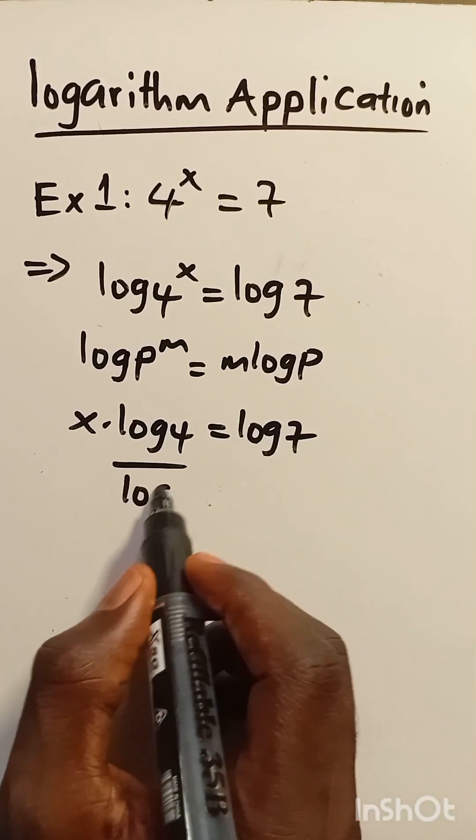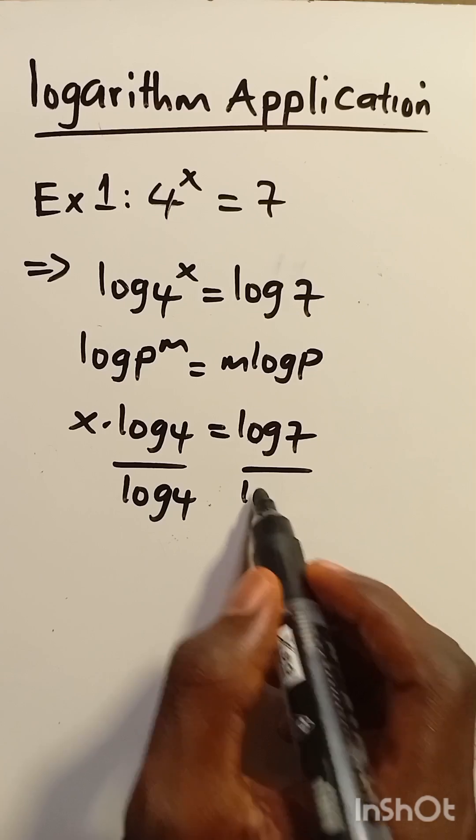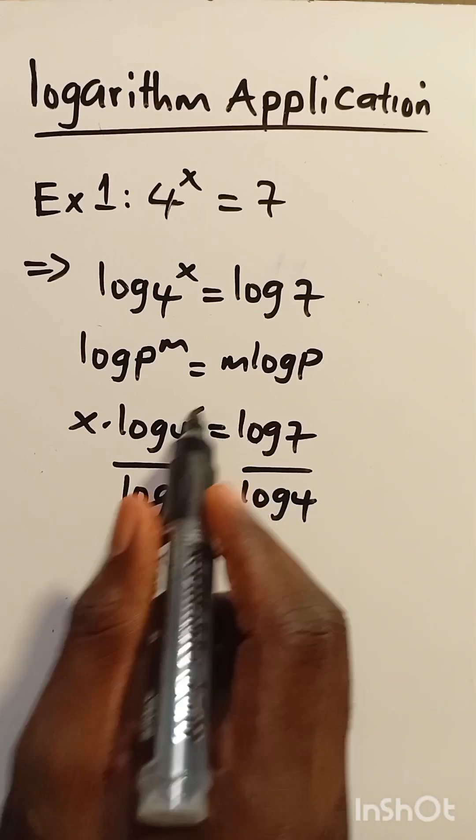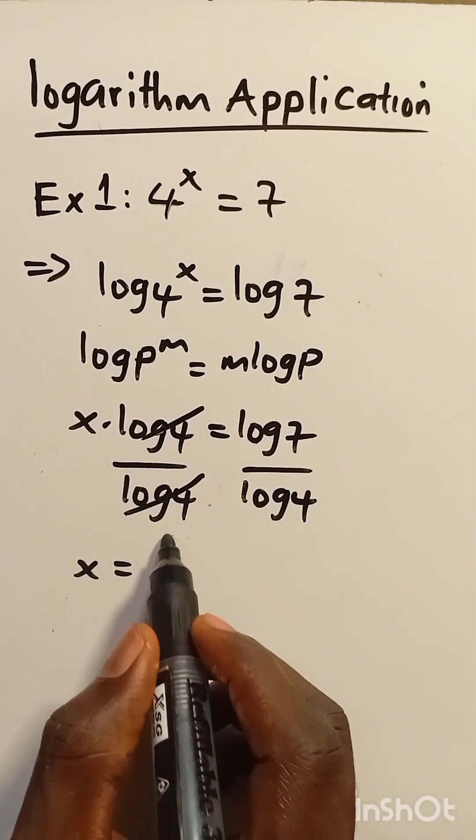So when we divide 3 by log 4, we cancel out this, we have x to be equals log...